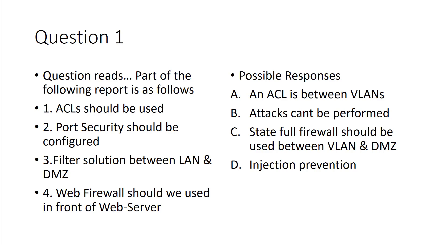The options include things like 'attacks can't be performed' and 'injection prevention.' Those are not technical controls, so options B and D are eliminated. Options A and C remain: A is 'an ACL is between the appropriate VLANs,' and C is 'a stateful firewall should be used between VLANs and the DMZ.'